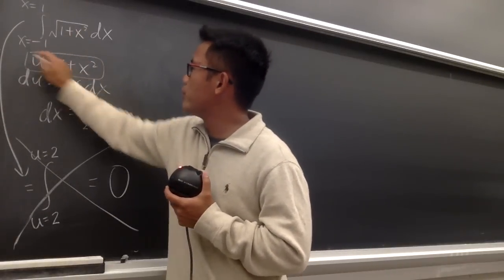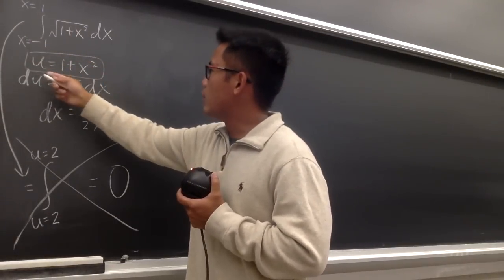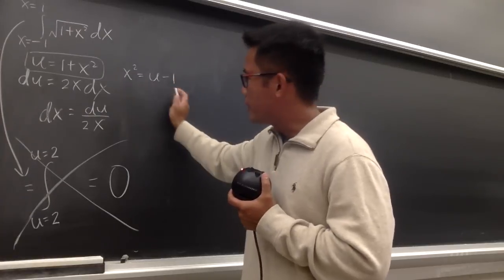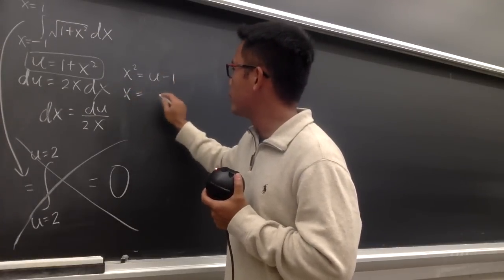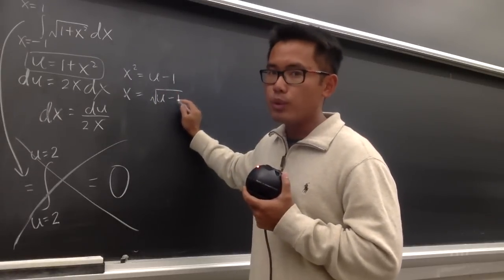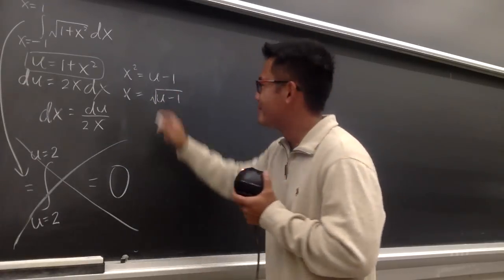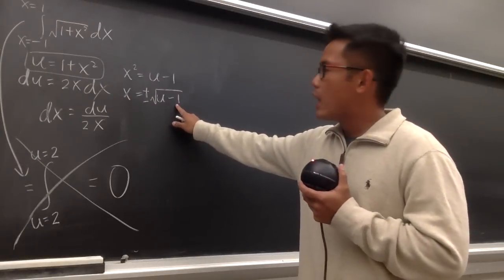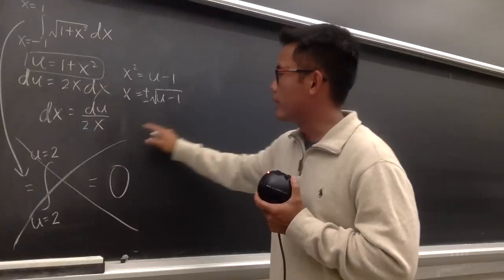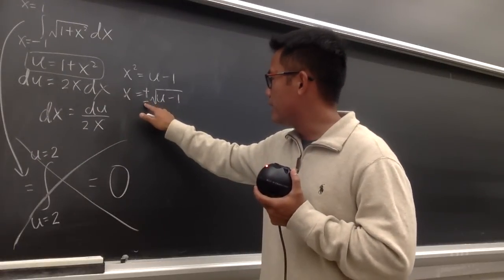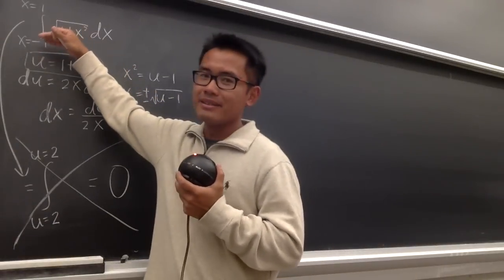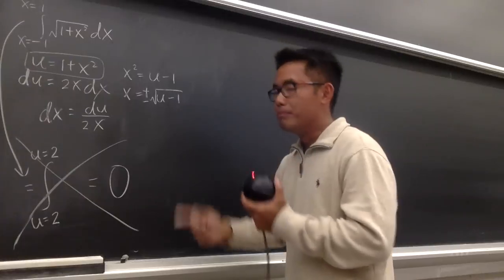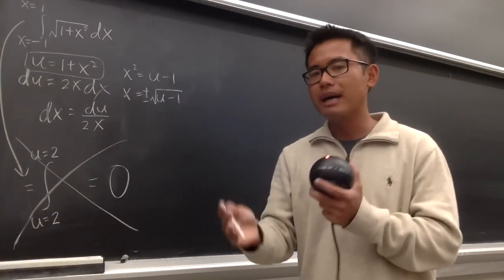If you look at u equal to 1 plus x squared, subtract 1 from both sides, so you get x squared equal to u minus 1. Then we take the square root of both sides: x is equal to plus or minus square root of u minus 1. We must have plus or minus. It depends on the range from negative 1 up to positive 1. We must split the integral into the positive and also the negative parts.